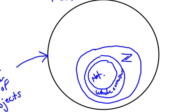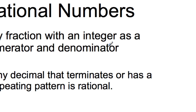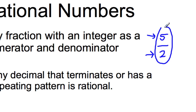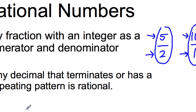Our next group is rational numbers — basically any number that can be written as a fraction where both the numerator and denominator are integers. For example, five over two is rational because five and two are both integers. The number 10 can be written as 10 over 1, and since both are integers, 10 is also rational. In decimal form, if you see any kind of repeating pattern — like 3, 2, 3, 2 repeating over and over — that is a rational number.